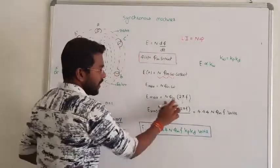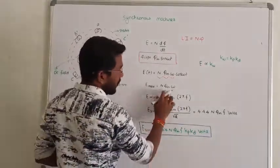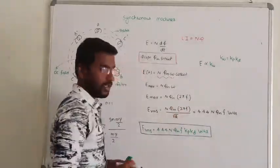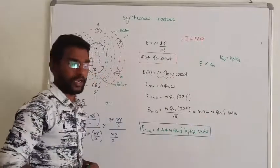From this, the RMS voltage can be found by dividing the maximum value by root 2, and replacing omega by 2 pi f. Then you get the value of induced EMF.